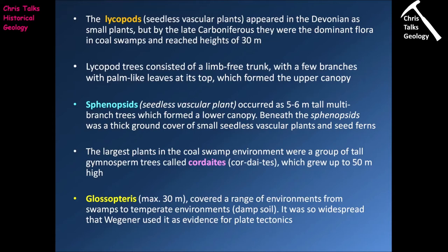Underneath the lycopods we had sphenopsids — also seedless vascular plants — which only ranged in height from about five to six meters. Because they are beneath the canopy in an environment with lower amounts of sunlight, what you need is as many leaves as possible to capture as much of that sunlight as you can. So the sphenopsids had multiple branches covered in as many leaves as they could possibly fit. Beneath them was a thick ground cover of smaller seedless vascular plants and seed-producing ferns — gymnosperms.